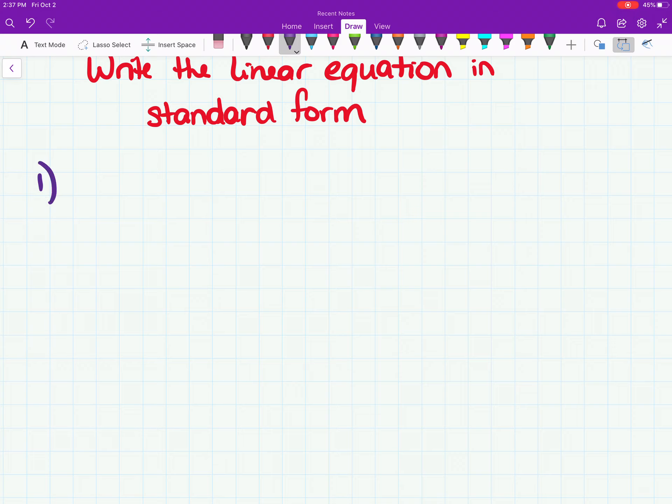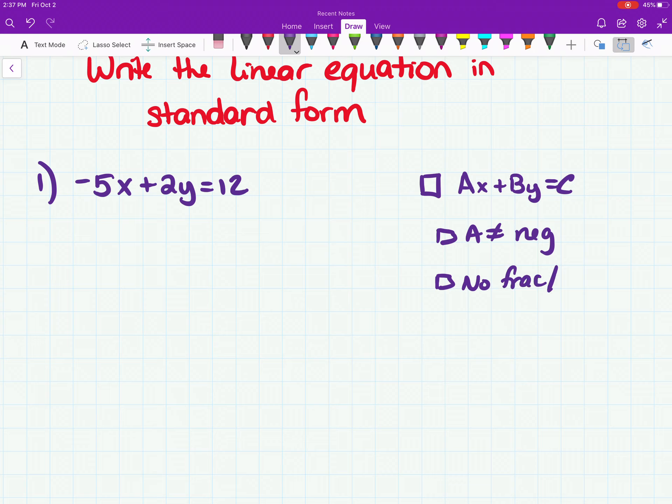Okay, the first one, negative 5x plus 2y equals 12. Here's what I do. I write, I actually have an idea of what I need. I know I need Ax plus By equals C. I know that A cannot be negative. I know no fractions or decimals. And I also know that GCF has to equal 1.